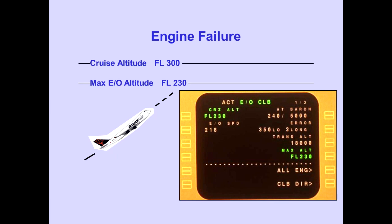If an engine fails during climb to an FMS-CDU cruise altitude higher than the maximum engine-out altitude, the maximum altitude is automatically transferred to the cruise altitude line.